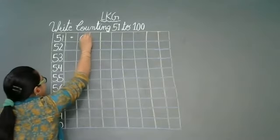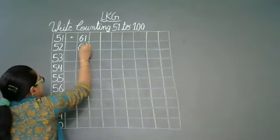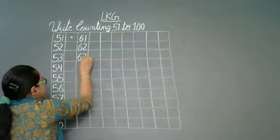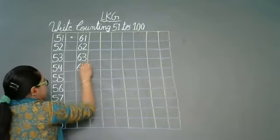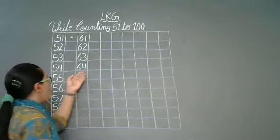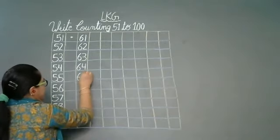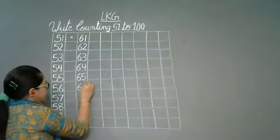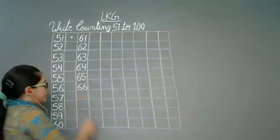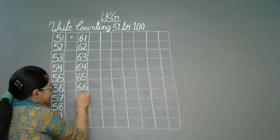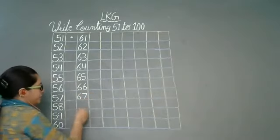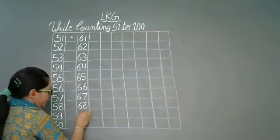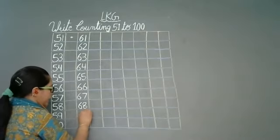Speak and write. 6, 1, 61. 6, 2, 62. 6, 3, 63. 6, 4, 64. 6, 5, 65. 6, 6, 66. 6, 7, 67. 6, 8, 68. 6, 9, 69.